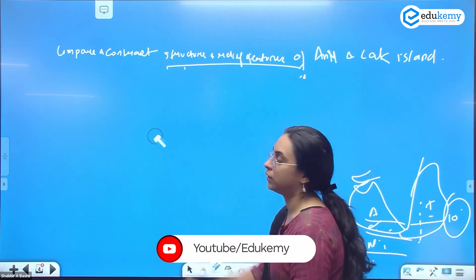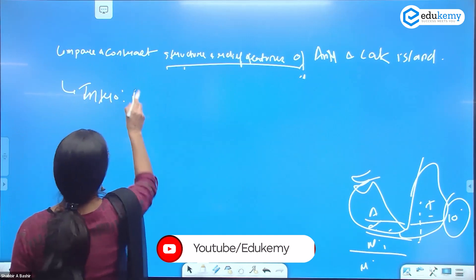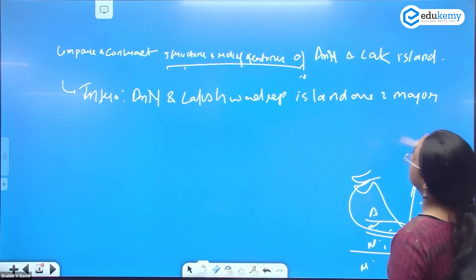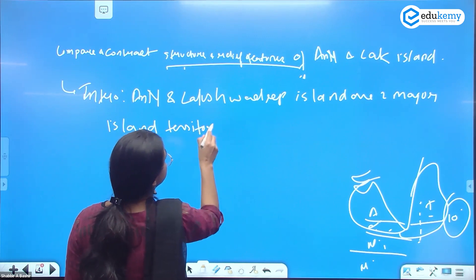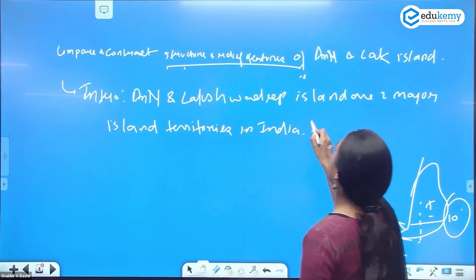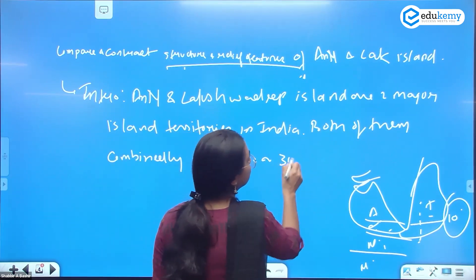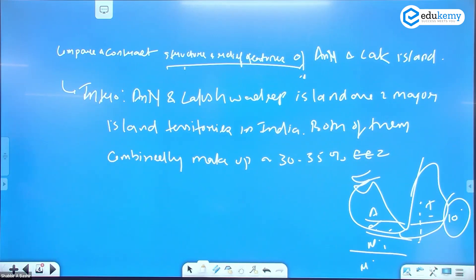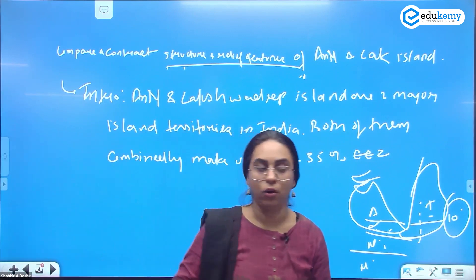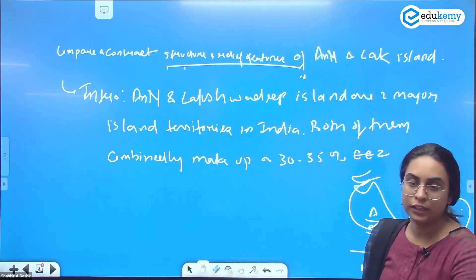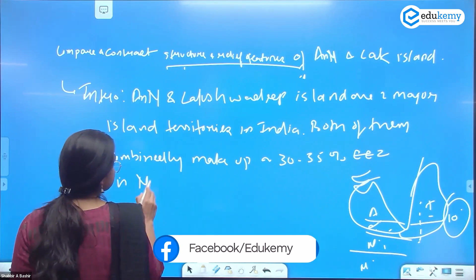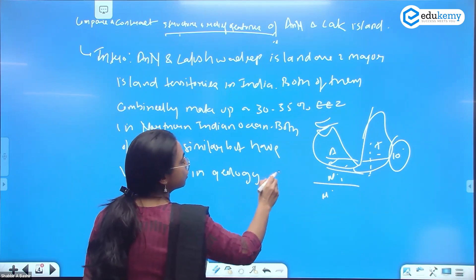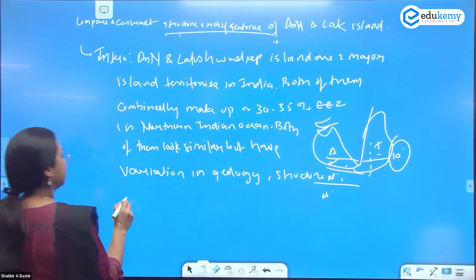In your introduction, state that the Andaman and Nicobar Islands and Lakshadweep Islands are two major island territories of India. Together, they make up nearly 30 to 35 percent of India's Exclusive Economic Zone (EEZ). The vast stretch of the EEZ is along these islands in the northern Indian Ocean. Both look similar but have significant variation in geologic structure and relief.